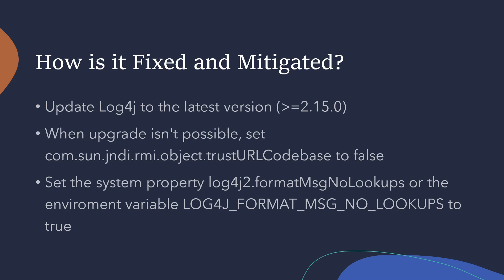I'm always hesitant to give mitigations instead of fixes because mitigations can sometimes be worked around — there might be a way to get around setting this to false. So right now this seems quite safe, but we don't know if there will be some way around it, so updating is always your best course of action. As a final option, there is a way to set the system property or environment variable called formatMsgNoLookups to true. If you do this, that should also stop the vulnerability. You should do either one or all three of these options to make sure you are perfectly secure.